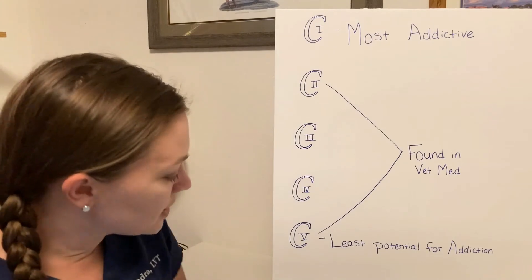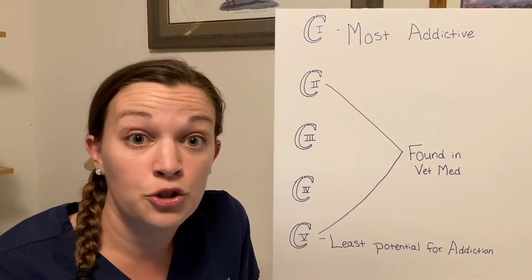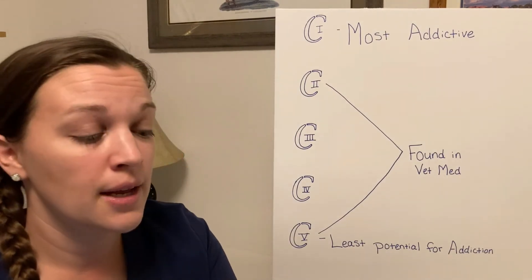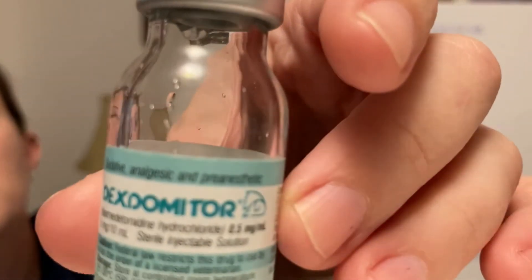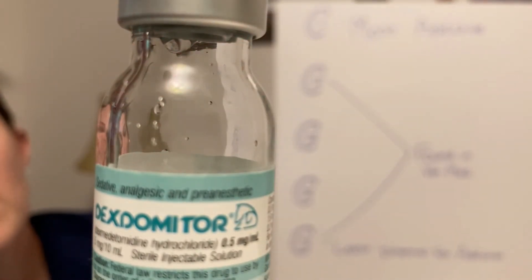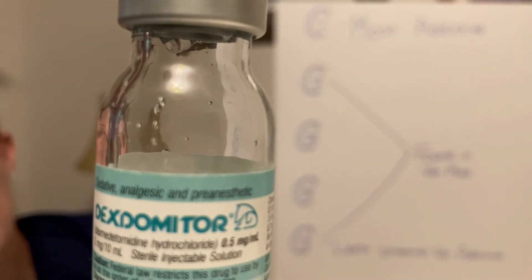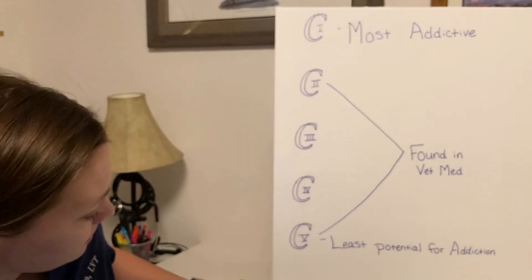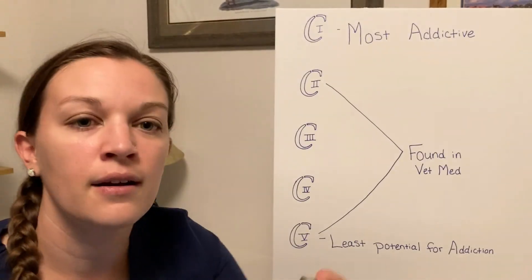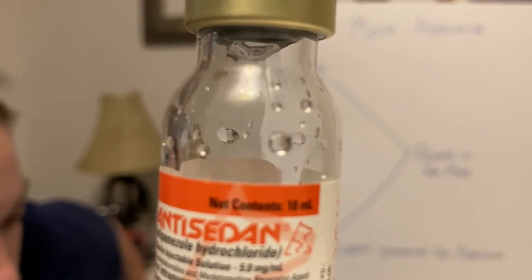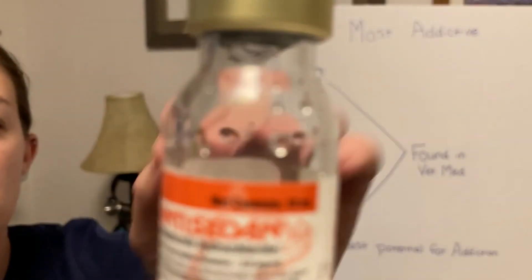Some other drugs that you'll see used commonly around the hospital but are not controlled drugs — one of them is dexmedetomidine, the trade name is Dexdomitor, one that's commonly used, and there is another generic. That's what that label looks like, and you can see that there's not a tiny little C to be found. His little friend, Antisedan — atipamezole here — and once again you can see there is no C or Roman numeral to be found on that label.